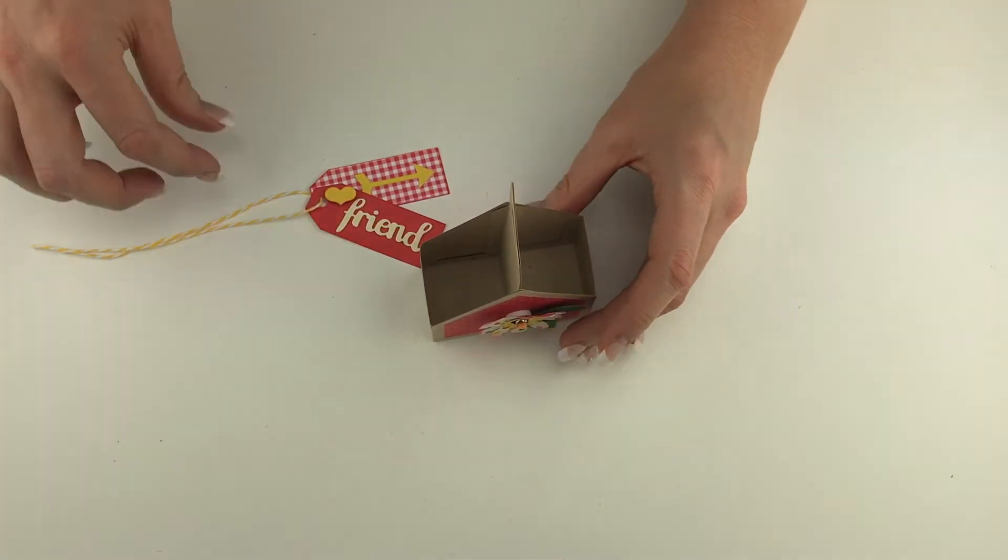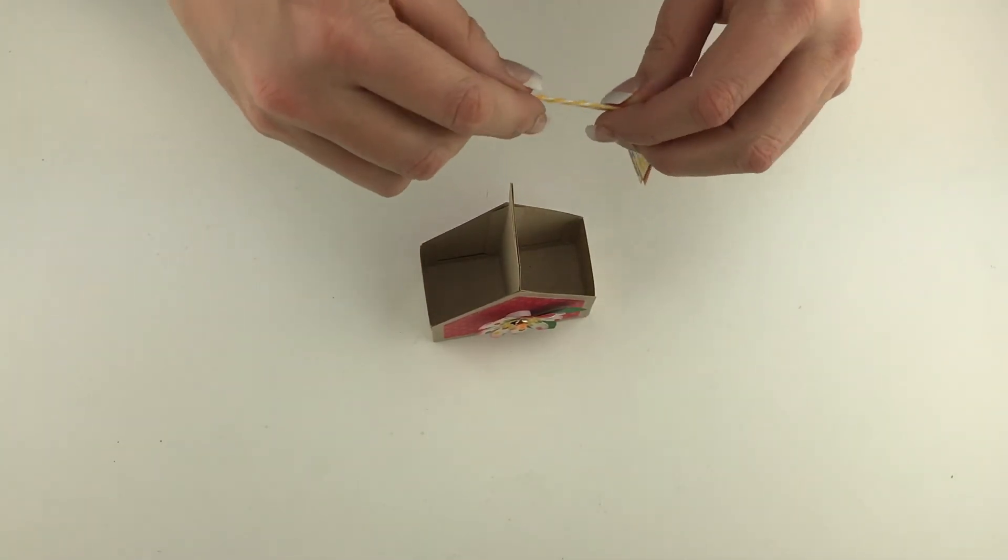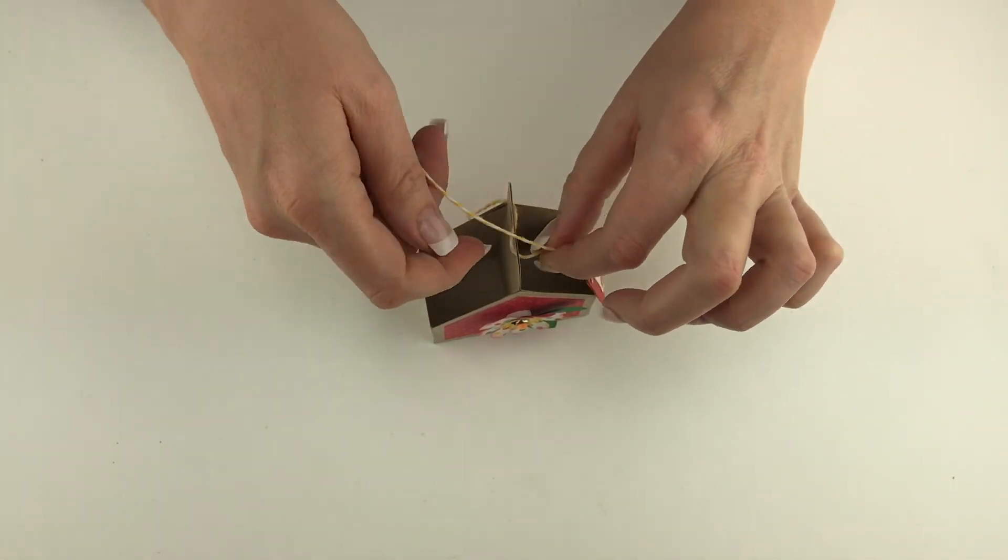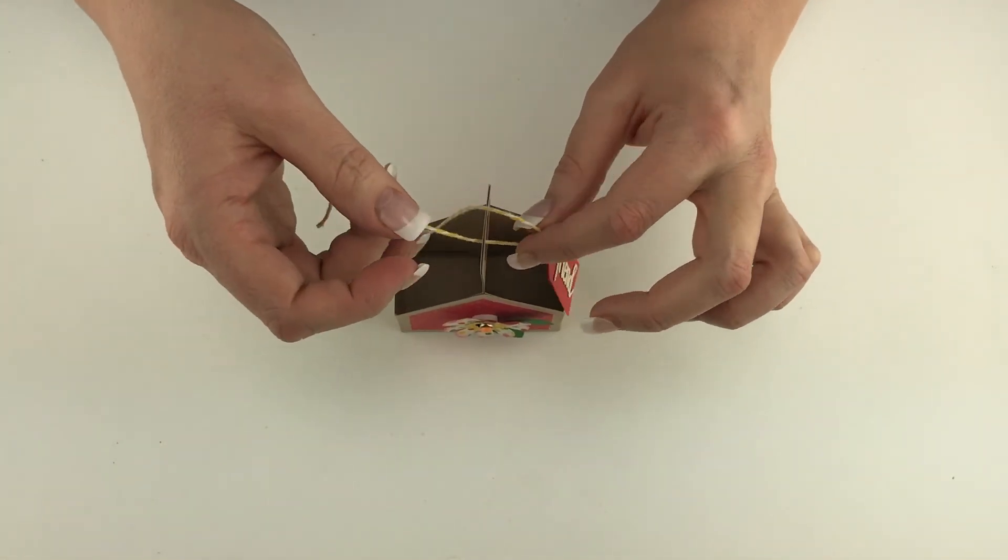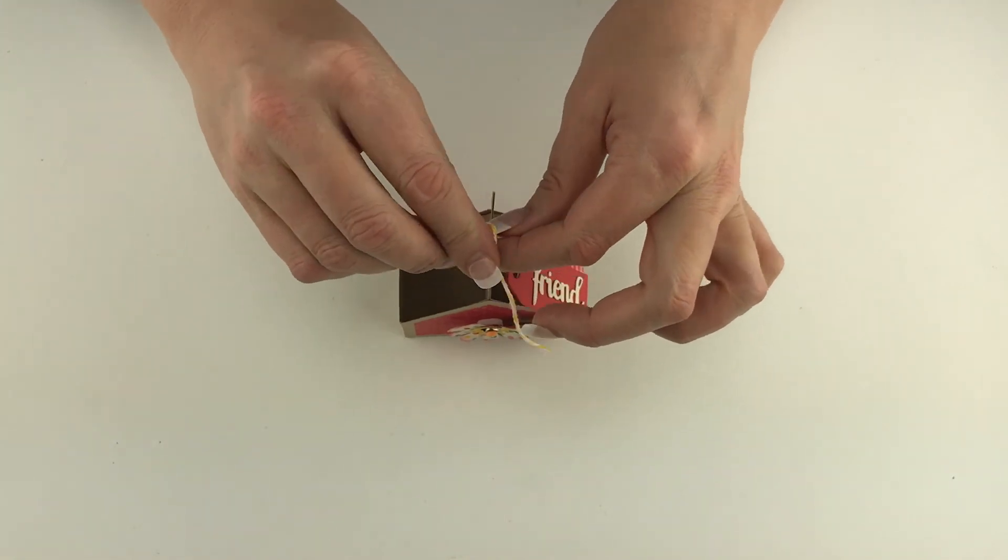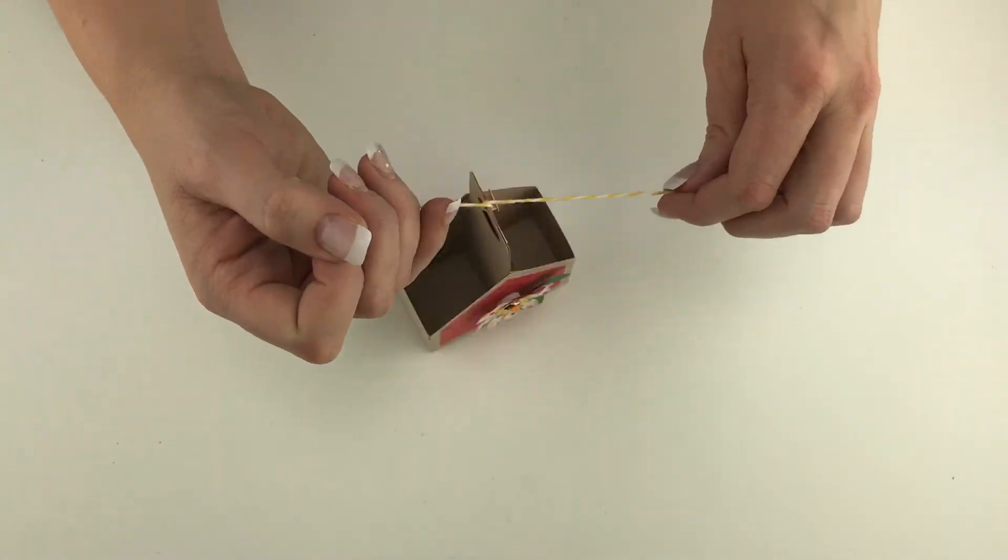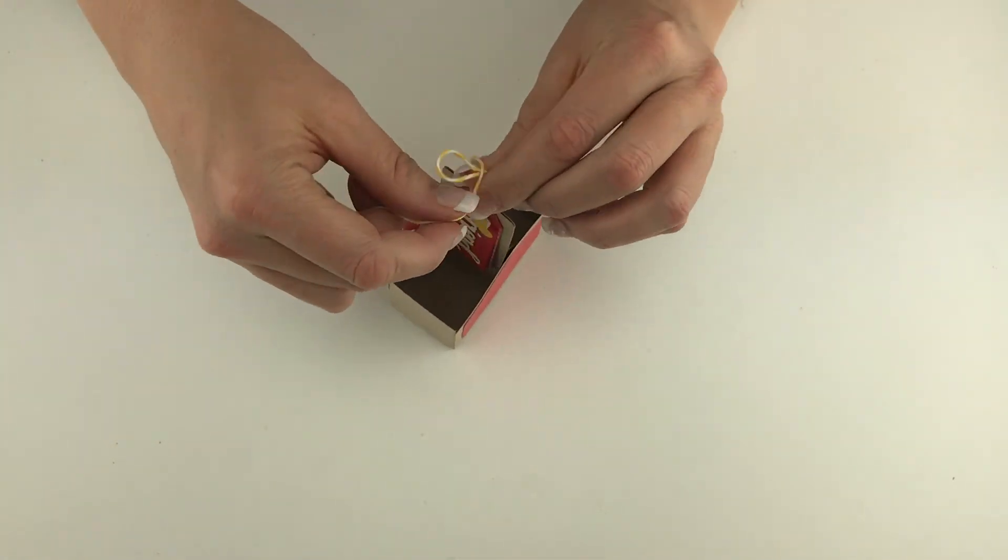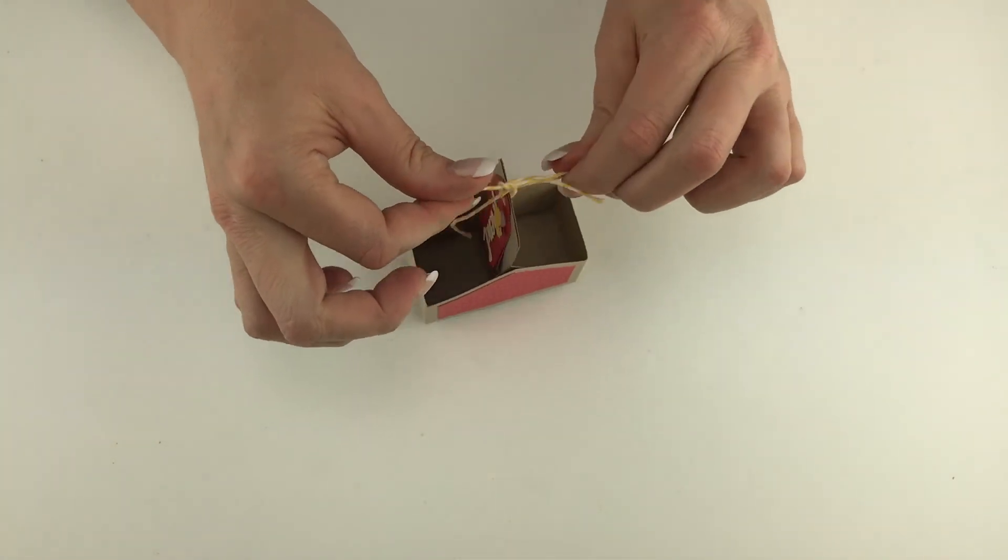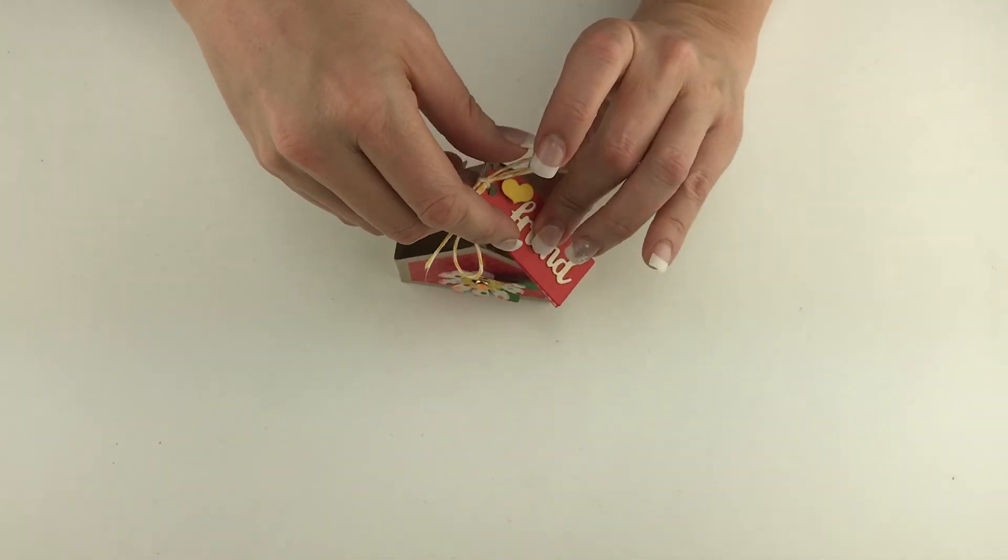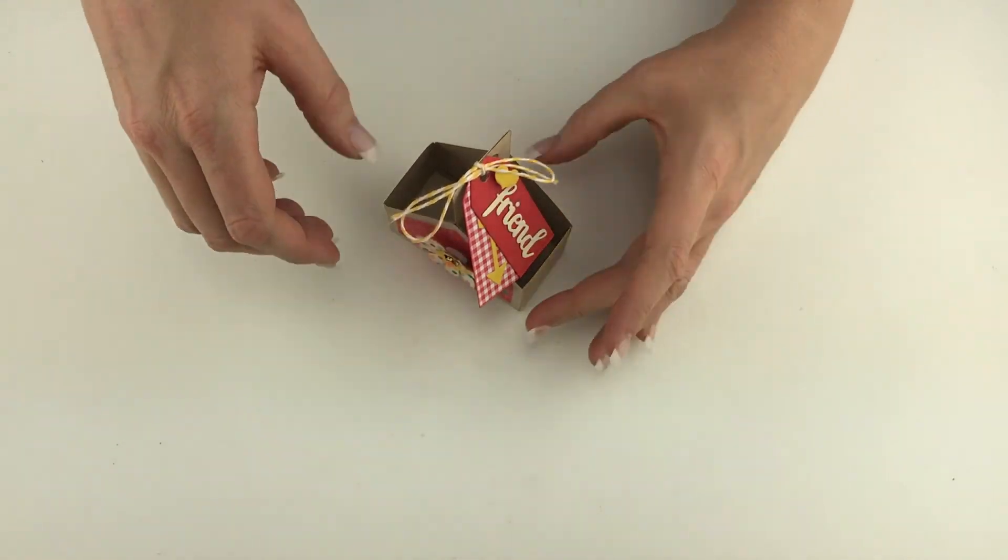Then I've got these little tags here. You can also use the word celebrate that's inside the die set if you want to make these for a little girl's birthday or something like that. Or this makes a great little friend gift. You can fill this little tote with nail polish or gum or candies, treats, whatever you'd like for a party, something like that. Here's a couple cute little tags on there. Isn't this adorable?